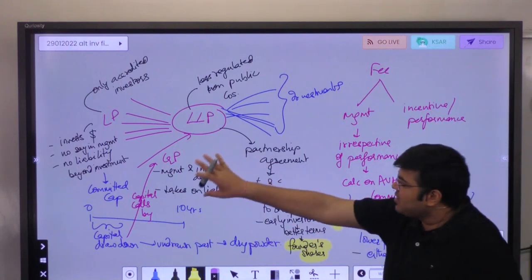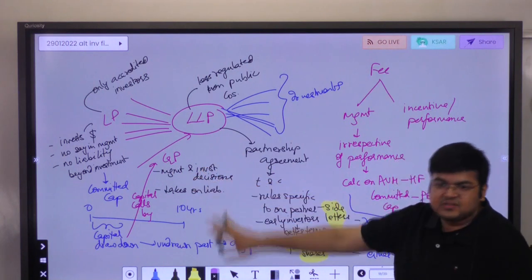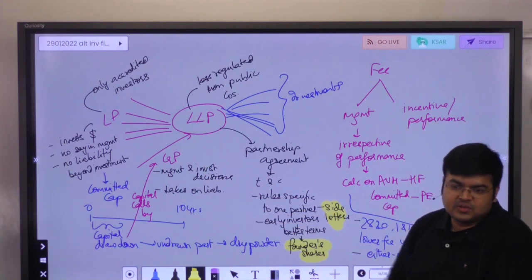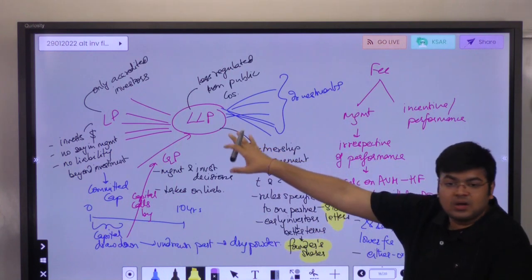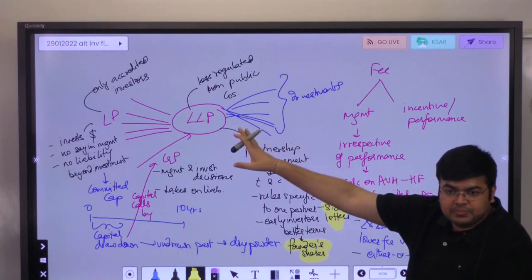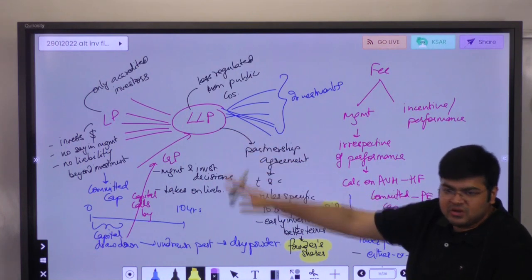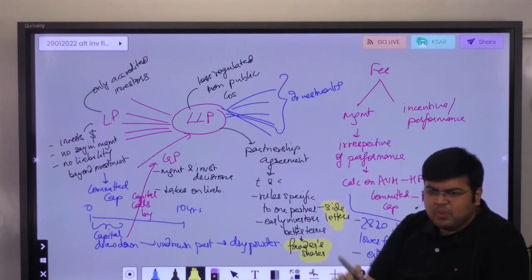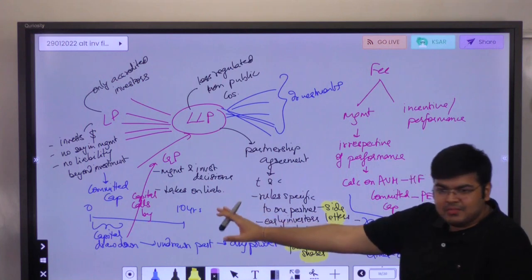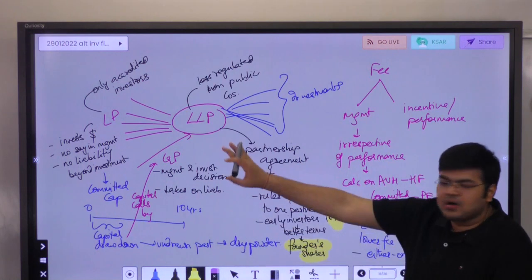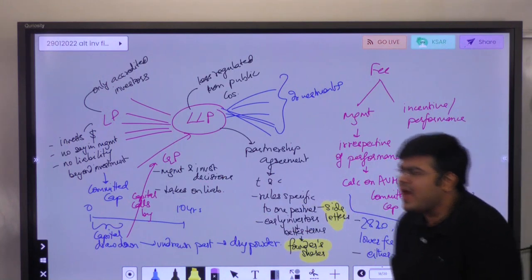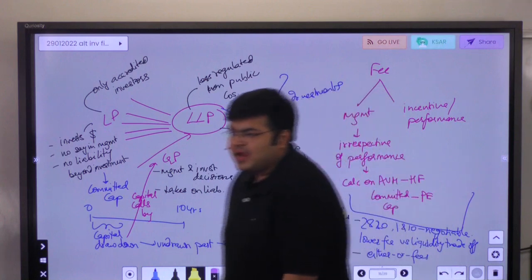The general partner is the one who manages and takes all investment decisions. The general partner is going to be taking on liability. If there is any liability at all, the general partner is responsible for it - the limited partners are not responsible for liabilities.